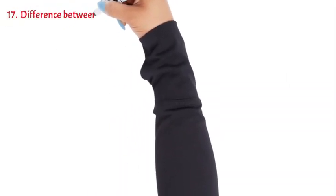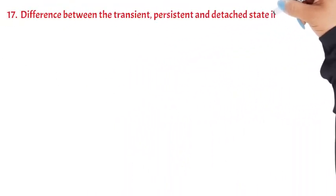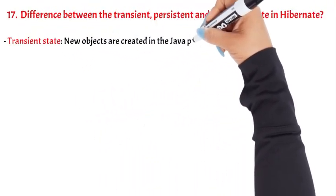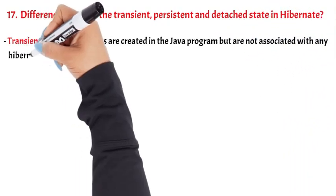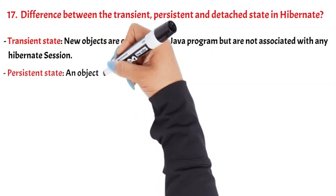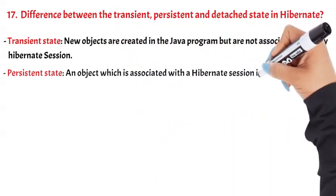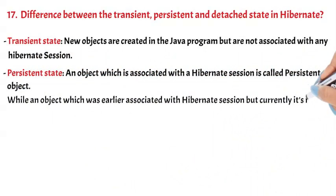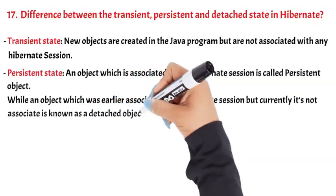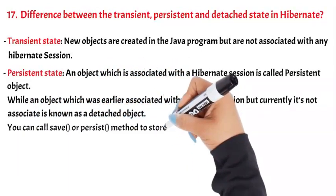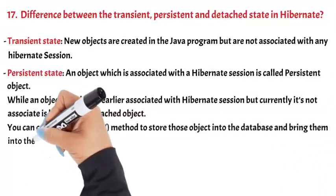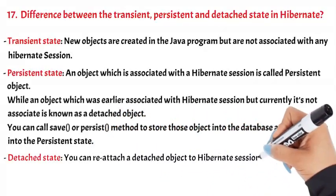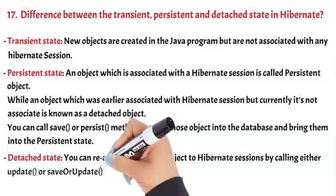Question 17: Difference between the transient, persistent, and detached state in Hibernate. Transient state: New objects created in the Java program but not associated with any Hibernate session. Persistent state: An object associated with a Hibernate session is called a persistent object. You can call save or persist methods to store objects into the database. Detached state: An object that was earlier associated with a Hibernate session but currently is not. You can reattach a detached object by calling update or saveOrUpdate.